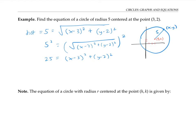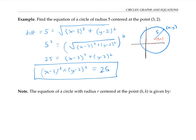A lot of times people will write x minus three squared plus y minus two squared on the left side of the equation, and the 25 on the right side. This is the standard form for the equation of this circle.